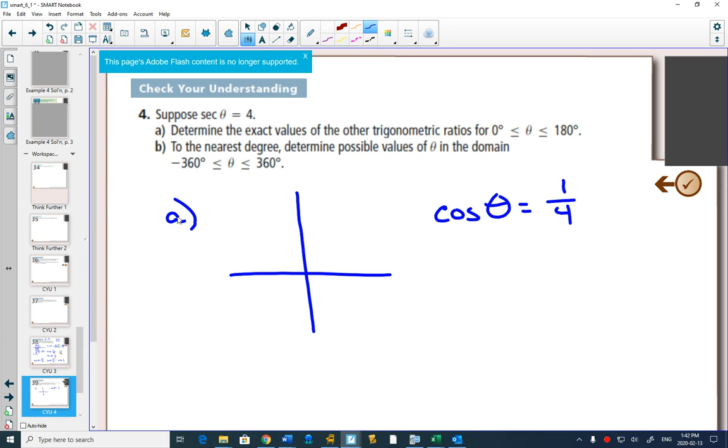Well, 0 to 180 is either quadrant 1 or quadrant 2. How do I know which quadrant it's going to be in? The CAST rule. And because cos is positive 1 over 4, it can't be in quadrant 2. It has to be in quadrant 1.